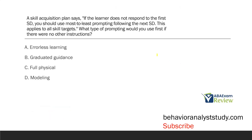The skill acquisition plan says if the learner does not respond to the first SD, you should use most to least prompting following the next SD. This applies to all skill targets. What type of prompting would you use first if there were no other instructions? Pretty straightforward prompting question to begin. We're looking at the type of prompting we're going to use given these are our only instructions.